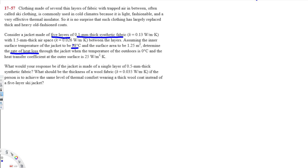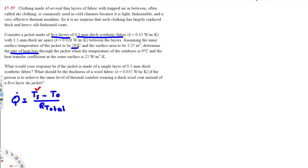To find the rate of heat loss, we use the equation Q̇ = (T_surface − T_outdoor) / R_total. We have T_surface = 28°C and T_outdoor = 0°C, so we need to find R_total.